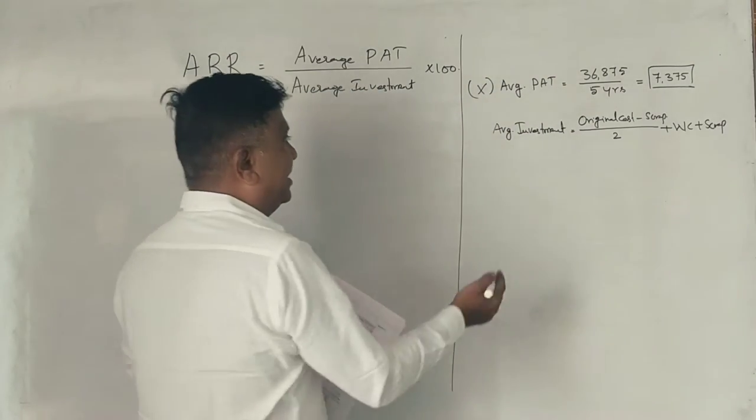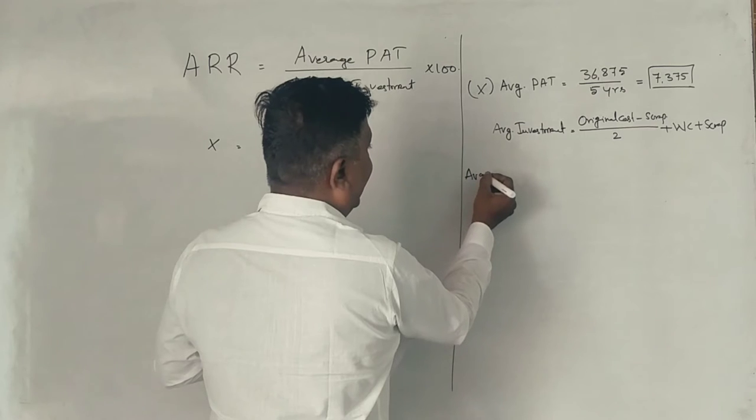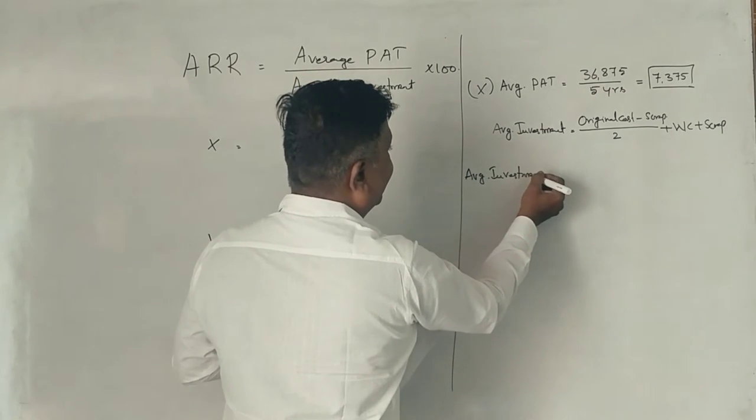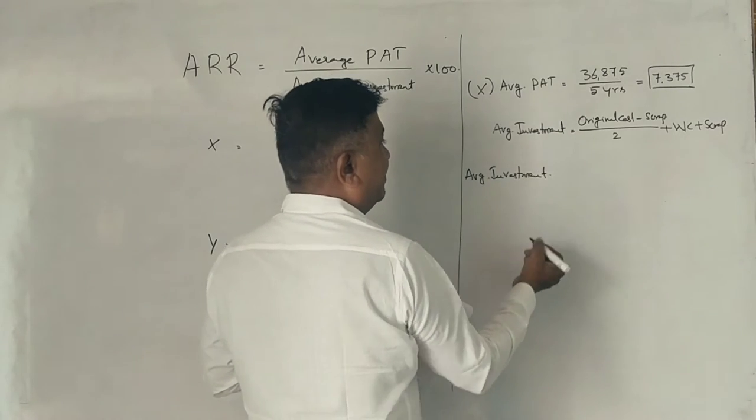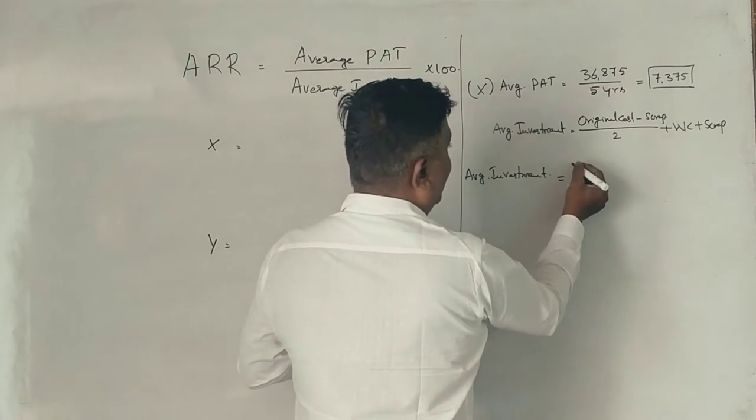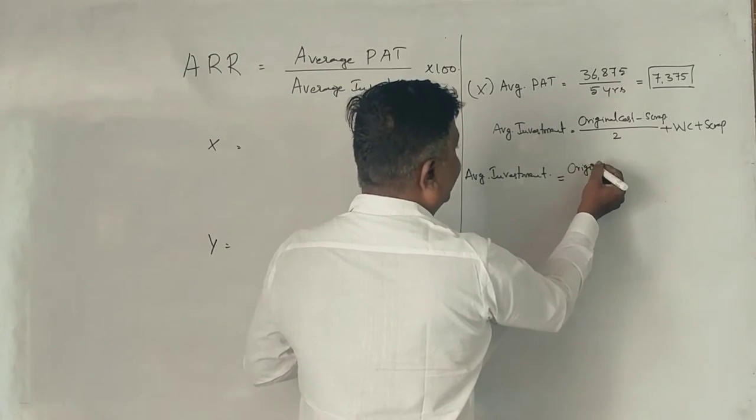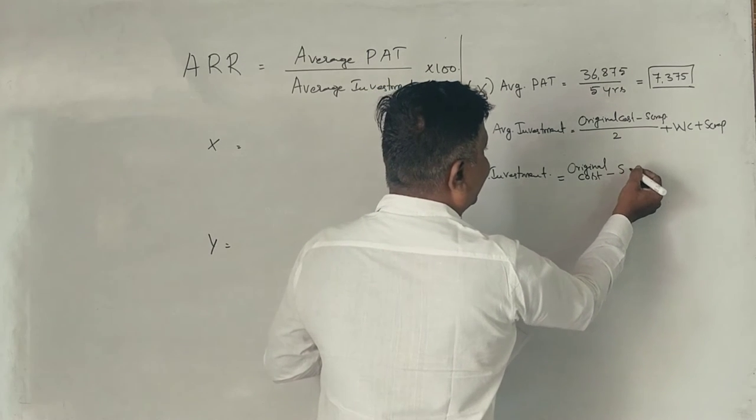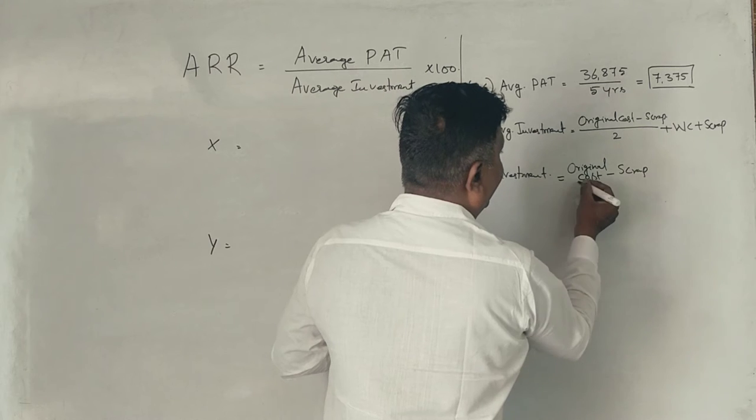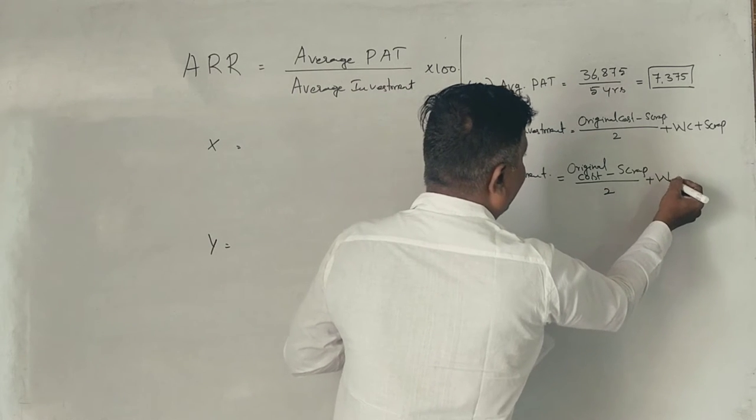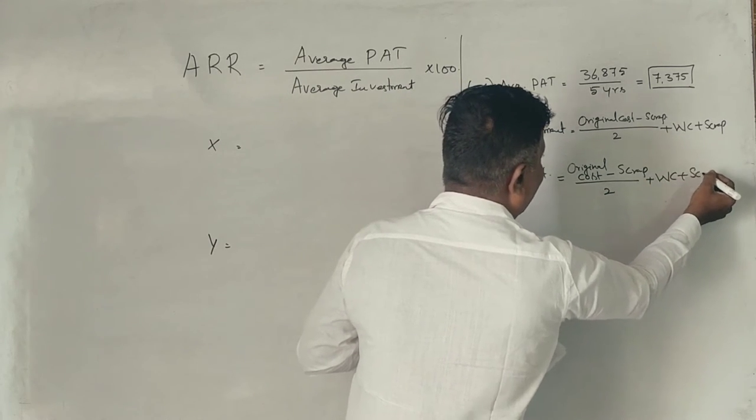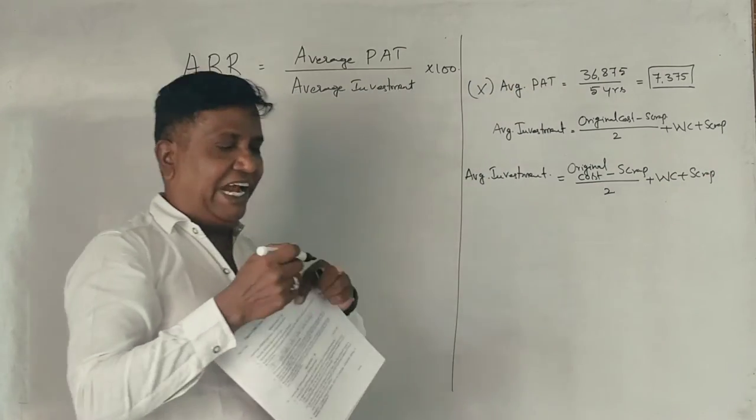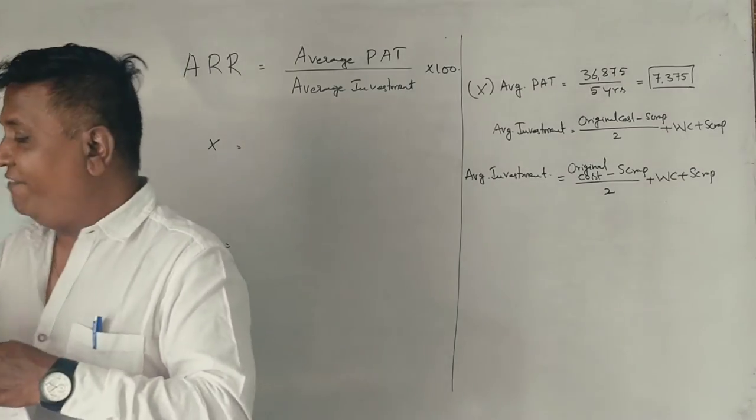So investment is equal to original cost minus scrap divided by 2 plus working capital plus scrap. So this is the formula.